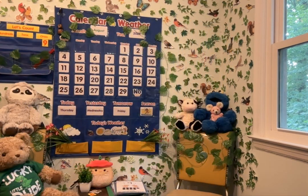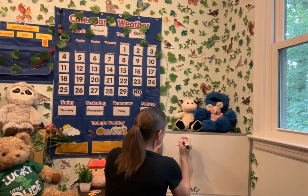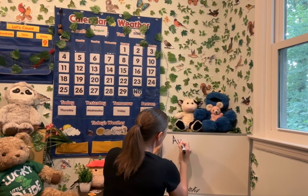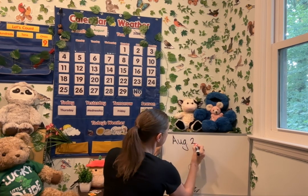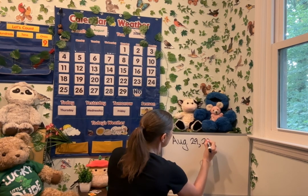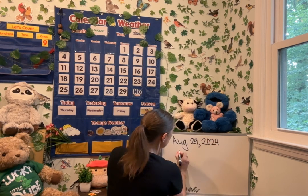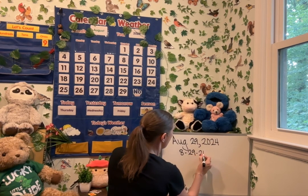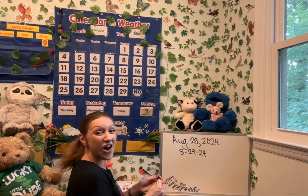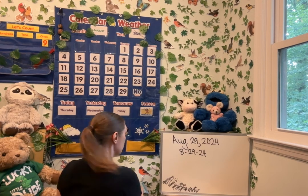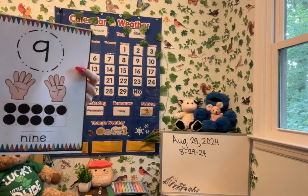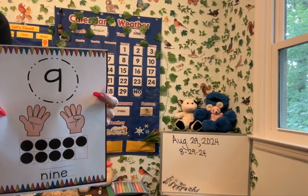Let's write the date. You need something to write on and something to write with, starting with your uppercase letter A. Capitalize the first letter of each month of the year because it's special and important. They also capitalize the first letter of each day of the week. Capital letter A-U-G, period, finger space, write the number 29 with a two and a nine, comma, finger space, the year 2024. August 29th, 2024. Happy ninth day of school, learning together in kindergarten.